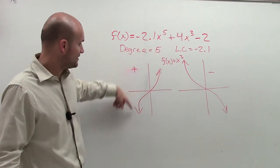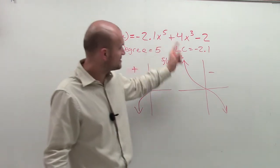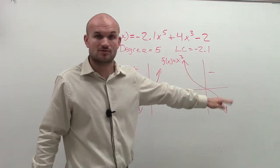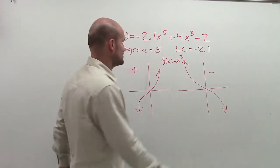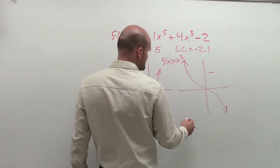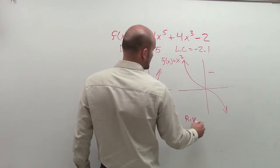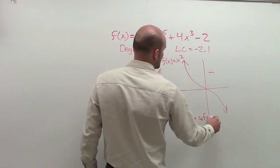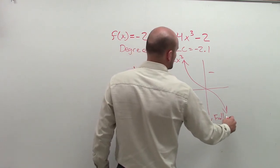So in this case, since I have a negative leading coefficient, my graph is going to rise left and then fall right.